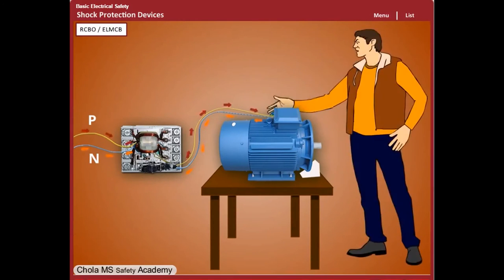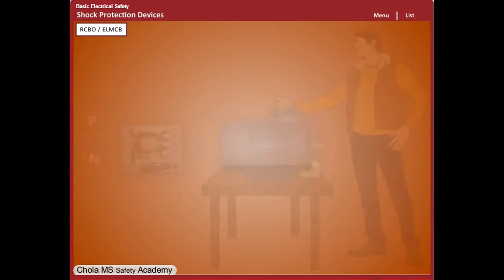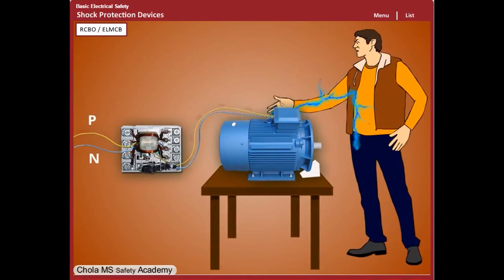The RCBO may consider touching both phases as a short circuit, but the current should be large enough for it to trip. The human limb resistance may not provide so much current and therefore may be subjected to serious injury.